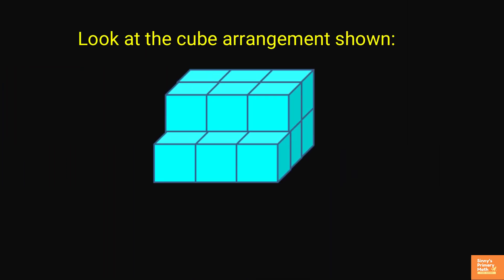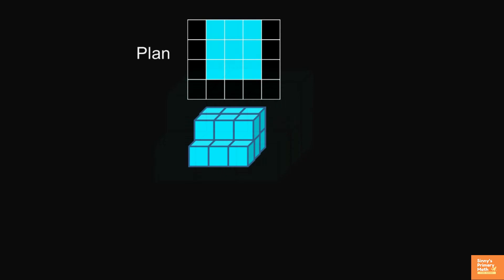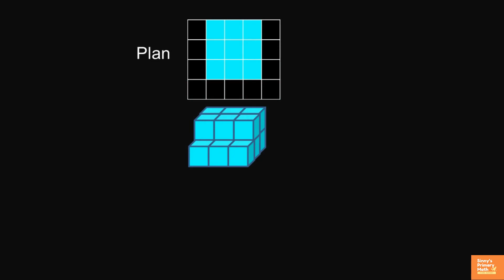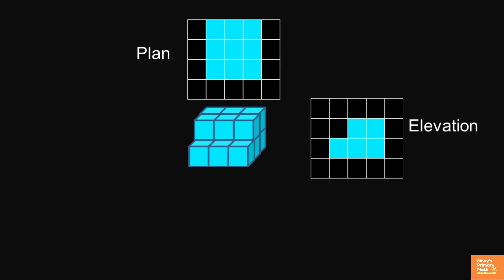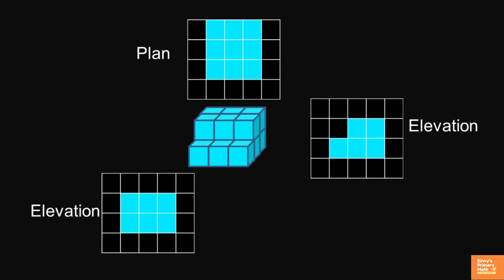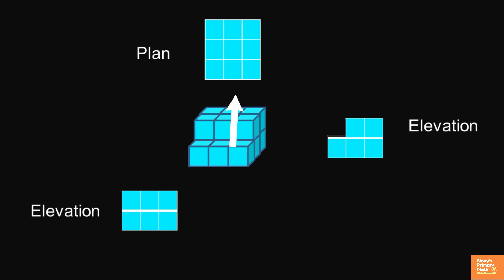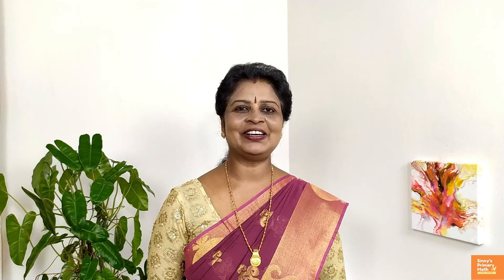Look at the cube arrangements shown. 2D views of 3D shapes. The layout of the plan and elevation drawings of 3D shapes align with each other. The height of the front align with the height of the side. The width of the plan should align to that of the front.